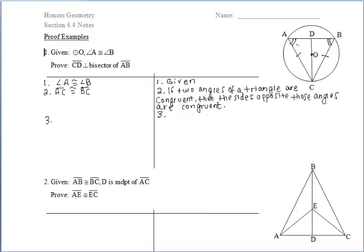At this point, we have a point C up here that is equidistant from points A and B. So I'm going to put a red dot on C. We know that C is equidistant from A and B because we have segment CA congruent to segment CB.